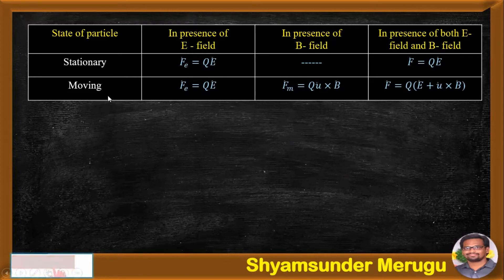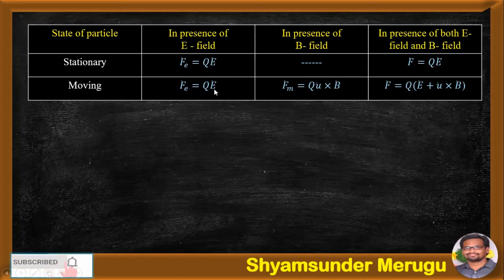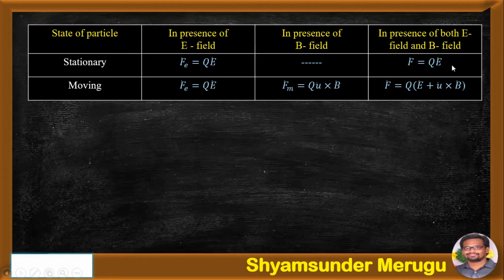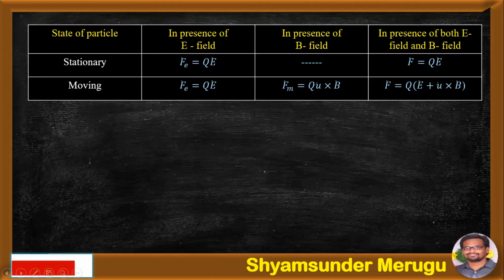When the charge is in motion in the presence of the electric field, the force exerted on the moving charge is Fe bar equals QE bar. And in the presence of the magnetic field, the force exerted on the moving charge Q is Fm bar equals QU bar cross B bar. And in the presence of both electric field and magnetic field, the force exerted on the moving charge is F bar equals Q of E bar plus U bar cross B bar, and we call this the Lorentz force equation.